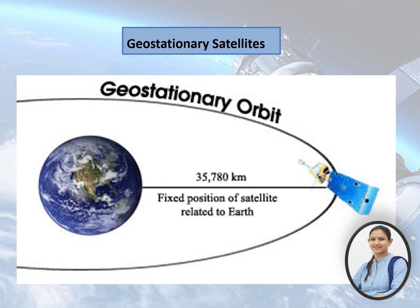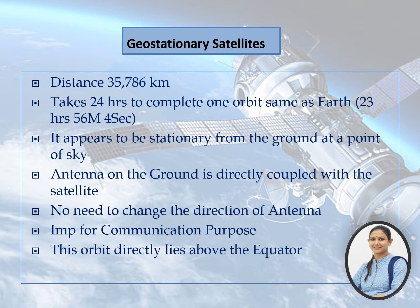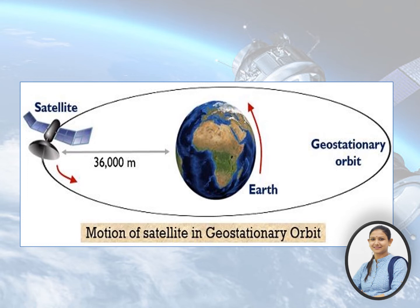This is why it appears to be stationary from the ground at a point in the sky. Geostationary satellites appear to be fixed over one spot above the equator. Receiving and transmitting antennas on earth don't need to track such a satellite; these antennas can be fixed in place and are much less expensive than tracking antennas. These satellites have applications like communication, television broadcasting, weather forecasting, and a number of important defense applications. They revolve in the same direction the earth rotates, that is west to east.